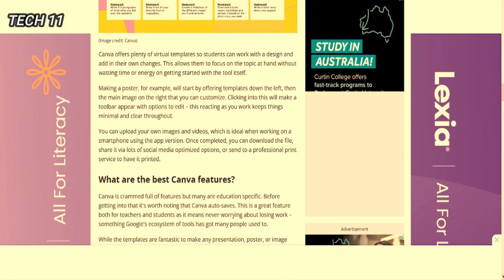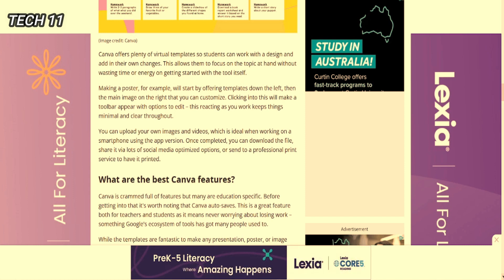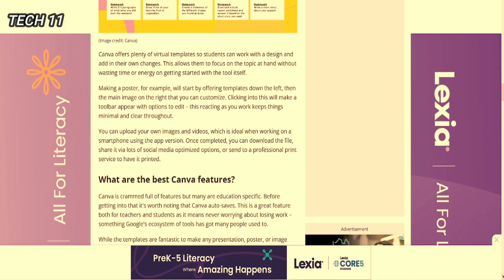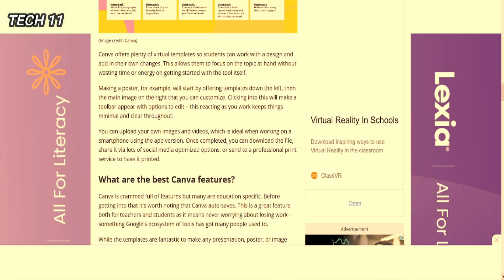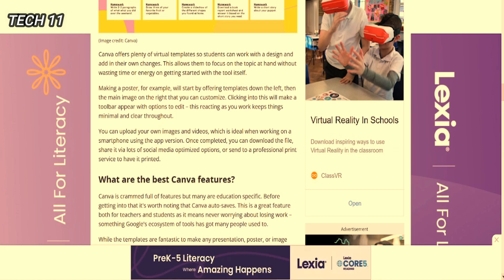Making a poster, for example, will start by offering templates down the left, then a main image on the right that you can customize. Clicking into it will make a toolbar appear with options to edit, keeping things minimal and clear throughout. You can upload your own images and videos, which is ideal when working on a smartphone. Once completed, you can download the file or share it via lots of social media optimized options.